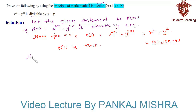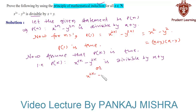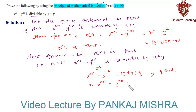In our next step, we will assume that P(k) is true for some positive integer k. That is, x raised to 2k minus y raised to 2k is divisible by x plus y, or equivalently, x raised to 2k minus y raised to 2k equals (x plus y) times Q, where Q belongs to natural numbers. We rearrange this as x raised to 2k equals y raised to 2k plus (x plus y) times Q. Let us call this equation 1.